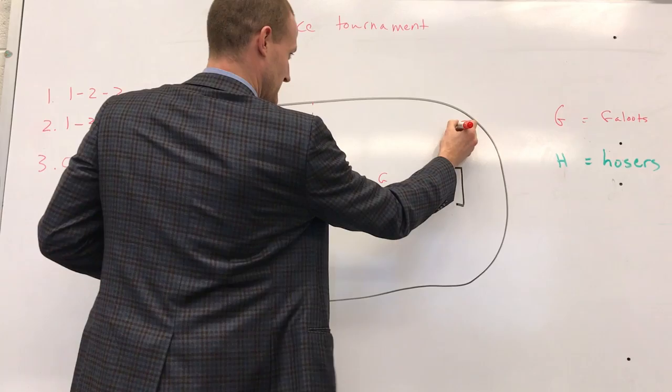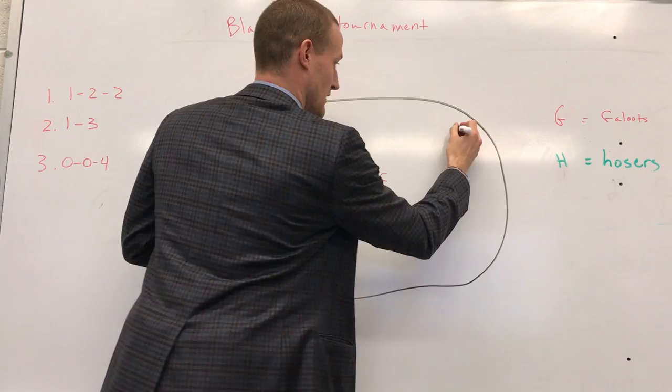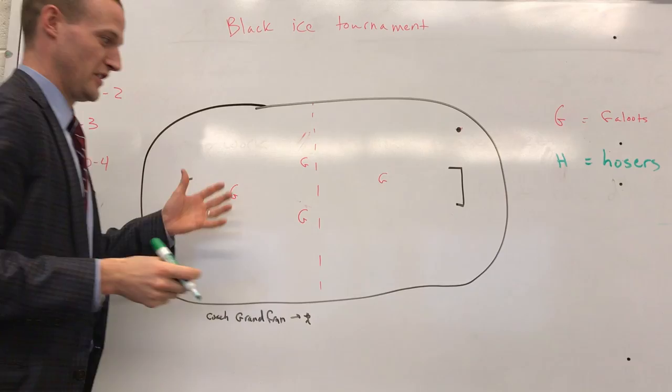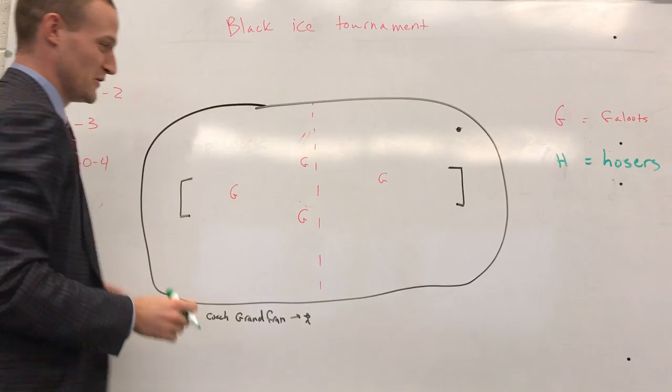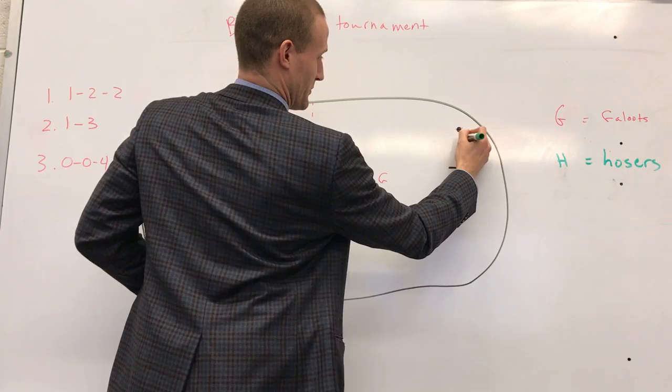Hopefully causing either a neutral zone turnover, which is a quick counter attack to Cam there, or maybe they dump it down and then we can get it, throw it back down and get in our shape. So say they have a guy here, a guy here, a guy here and a guy here.